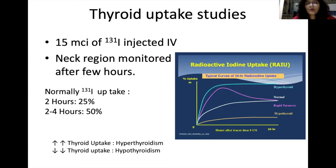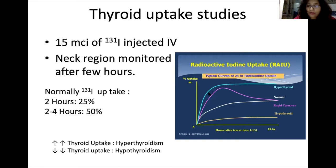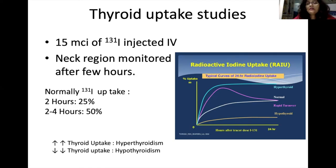An example of nuclear medicine is thyroid uptake study. Here, 15 mCi of iodine-131 is injected intravenously into the patient and the neck region is monitored after a few hours. Normally there should be 25% uptake at 2 hours, increasing to 50% within 2 to 4 hours. In hyperthyroid patients, radioactive iodine uptake is much higher than normal, while in hypothyroid patients it is much less. This thyroid uptake study allows us to easily identify the thyroid status of the patient.